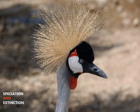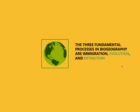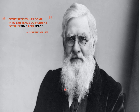This week we're talking about speciation and extinction. If you remember last week, I mentioned that the three fundamental processes in biogeography are immigration, evolution, and extinction. You may think evolution and extinction are two completely different things, but in reality they're usually two different sides of the same coin. We'll cover both of them in this module and then dive into them individually more so later on.